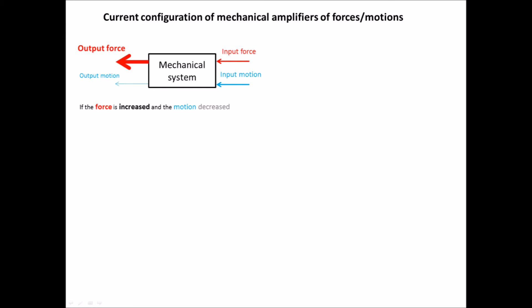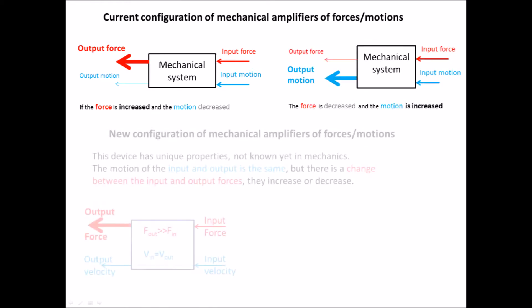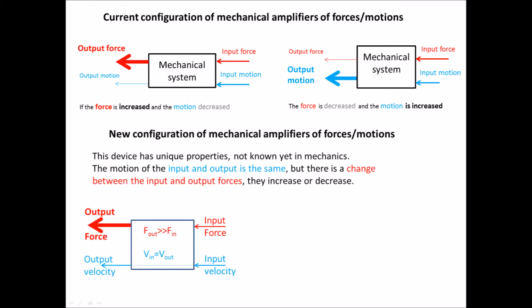On the left you see an example of an amplifier that reduced the motion in order to gain force. On the right, the amplifier reduces the force in order to gain velocity. This new device has unique properties not known yet in mechanics. The input and output motion is the same, but there is a change between the input and output forces. These forces are increased or decreased.